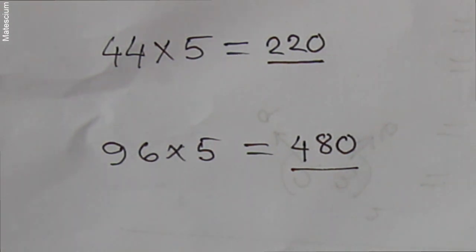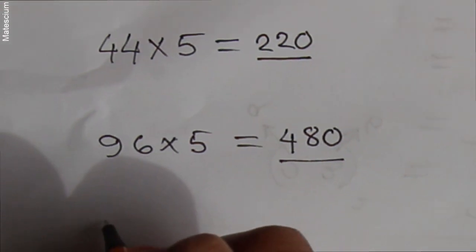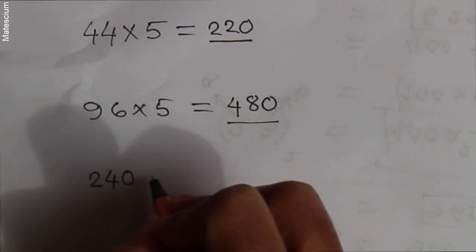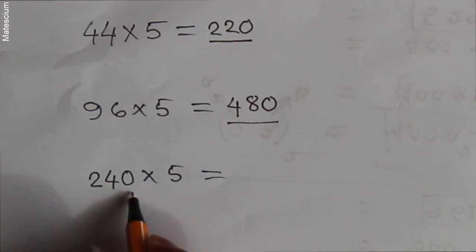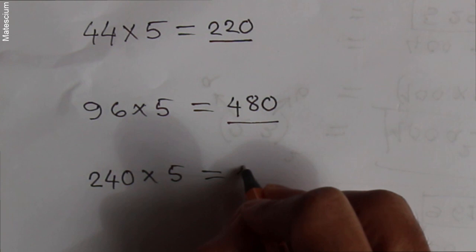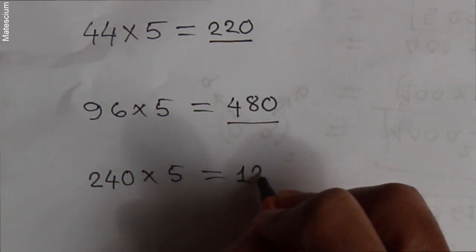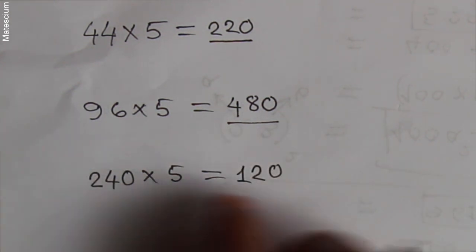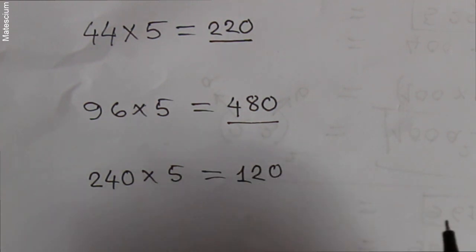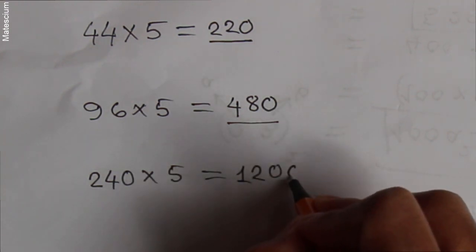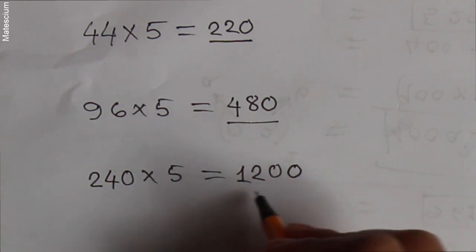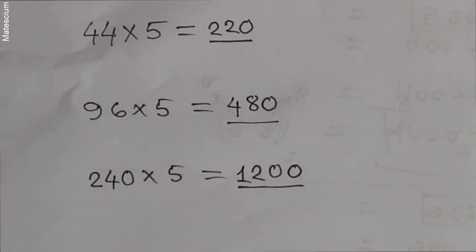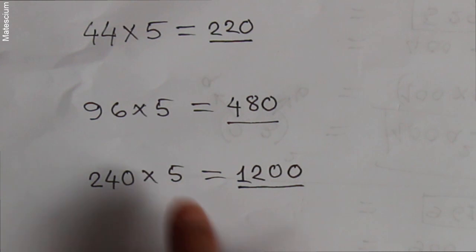Let's say 240 multiplied by 5. Half of 240: 2 gives 1, 4 gives 2, and the 0 stays — so half of 240 is 120. Then write an additional 0 here. That means 1200 is the answer of 240 times 5. This is so simple!